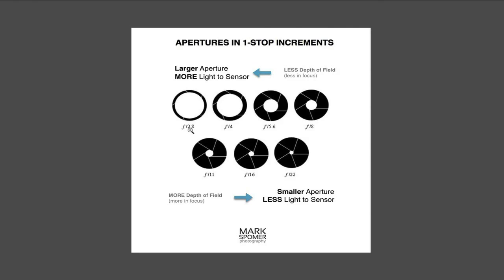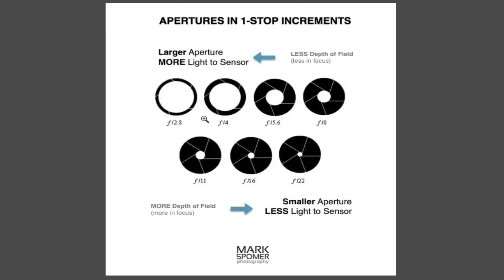Here's how aperture works. Here is a chart I put together that shows f2.8 — you'd think the larger the number, the bigger the opening, but it's backwards. f2.8 is actually your largest opening, letting the most light in, and f22 is the smallest opening, letting the least amount of light in. So when you're letting the least amount of light in, you have more depth of field. The higher your f-stop number, the more depth of field, the more you have in focus. The smaller the f-stop number, your depth of field decreases and it allows more light into the sensor.